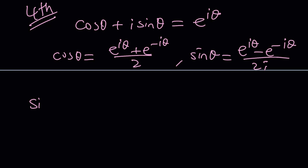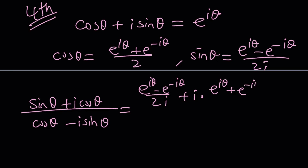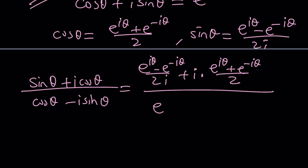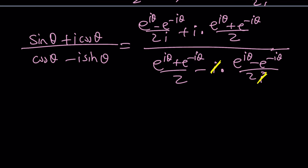Now we're going to plug those in. Replace sine theta with e to the i theta minus e to the negative i theta over two i, plus i times cosine theta which is e to the i theta plus e to the negative i theta divided by two. All of that divided by cosine theta — e to the i theta plus e to the negative i theta over two — minus i times sine theta which is e to the i theta minus e to the negative i theta divided by two i. Notice that the i cancels out, giving a common denominator, and multiplying by two i handles the denominators so that i squared equals negative one negates that term.